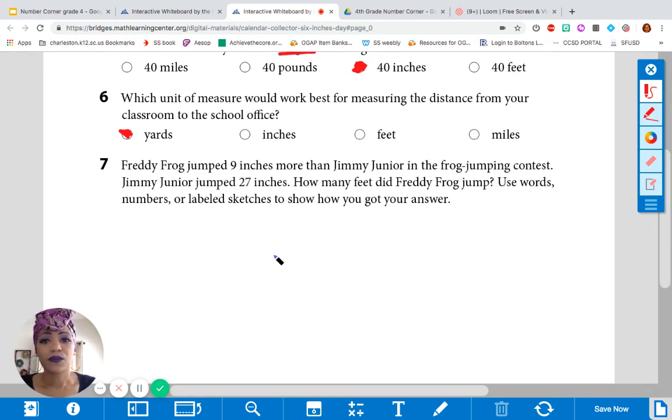We have one more. Read that silently yourself really quickly. All right. Think about the critical information that's needed to solve this problem. It says, Freddy Frog jumped 9 inches more than Jimmy Jr. And Jimmy Jr. jumped 27 inches. I'm going to underline that. 9 inches more. Remember, and he jumped 27. We've got to focus on what the question is asking because it says, How many feet? So, we have to do a conversion there. All right.